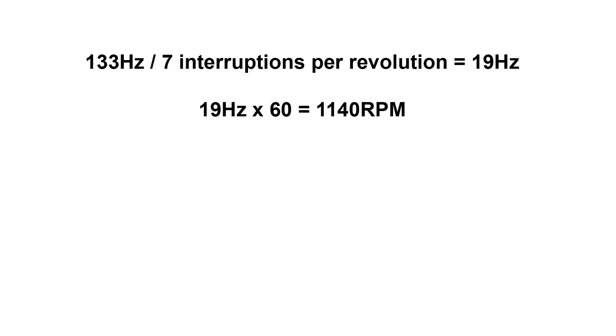Since there are 60 seconds in a minute, if you multiply the frequency in Hz by 60, you get the rotations per minute. So 19 Hz times 60 tells us that this fan is rotating at 1140 RPM.